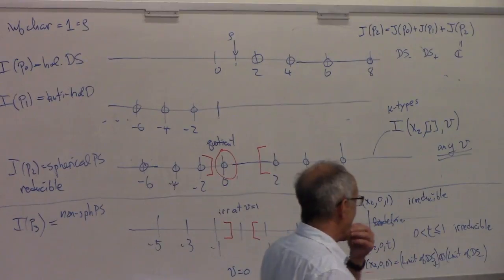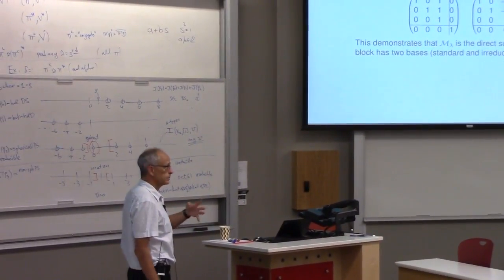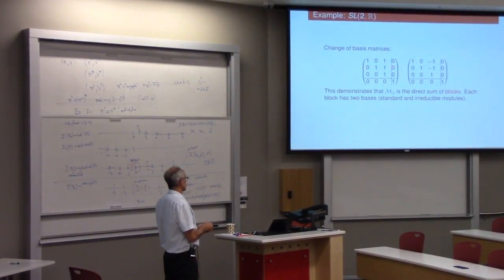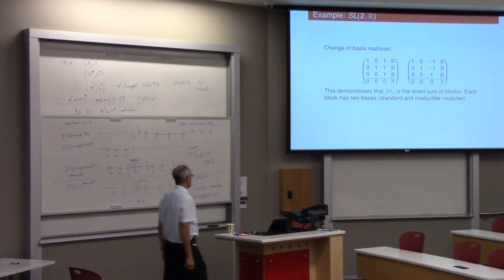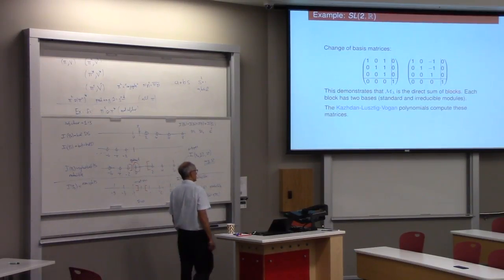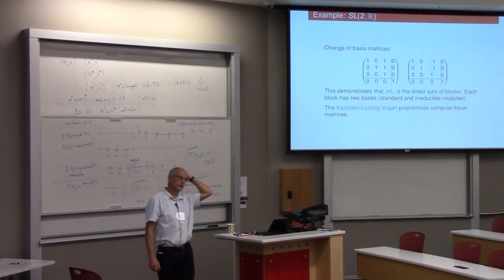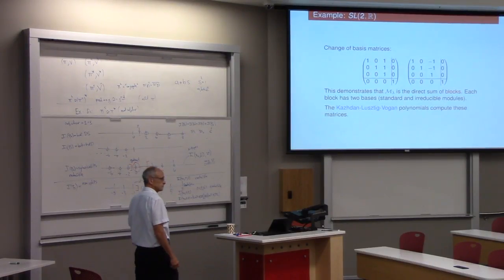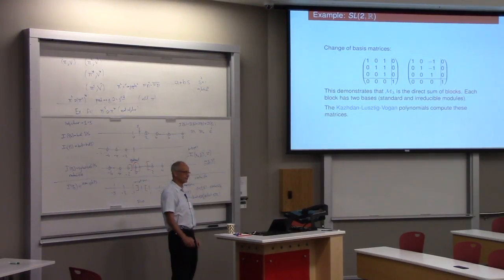And, as is evident in this picture, there are four representations of infinitesimal character rho, but they break up into two blocks. And this matrix is block diagonal. And the representations which are grouped together in these matrices are called a block. Oh, that's what I say here. The M_lambda is a direct sum of blocks. And each block has these two bases and these matrices which go back and forth. And the Kazhdan-Lusztig-Vogan polynomials compute these matrices. Question? One question. No, no, the representations are like columns too. Oh, yeah. I'm writing these as columns. Thank you. That's, you can blame Mark for that.